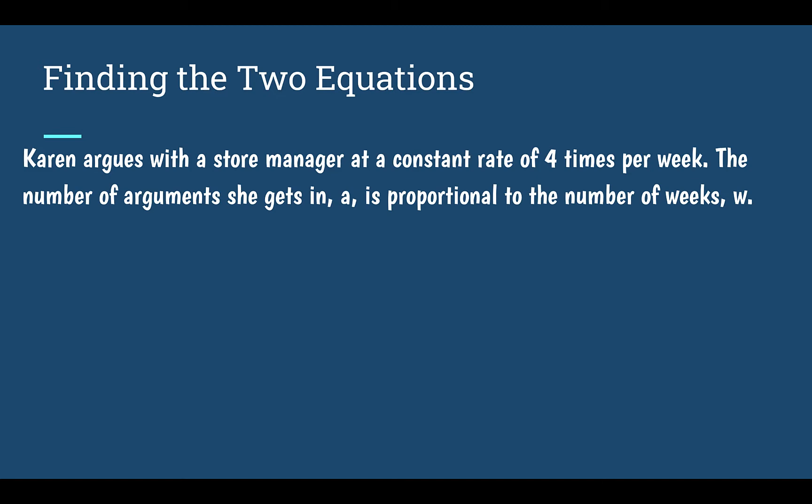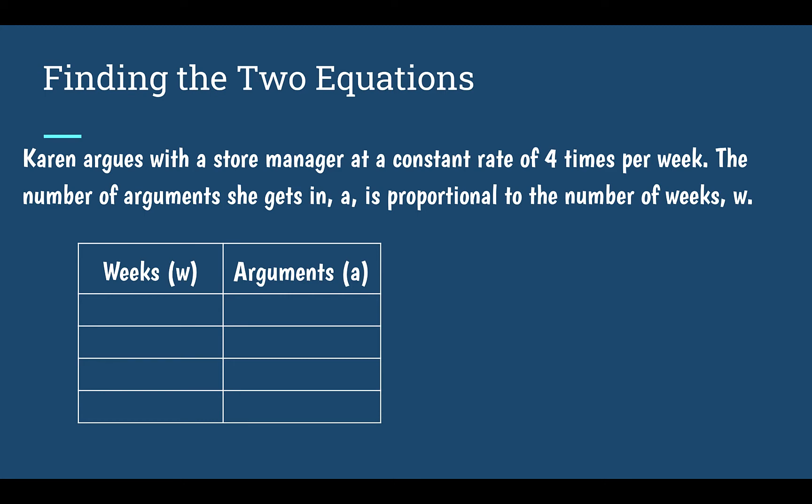Karen argues with a store manager at a constant rate of four times per week. The number of arguments she gets in, A, is proportional to the number of weeks, W. Let's start by making a table. I'm going to start with the number of weeks, and we can figure out how many arguments she has been in, keeping it in a proportional relationship.